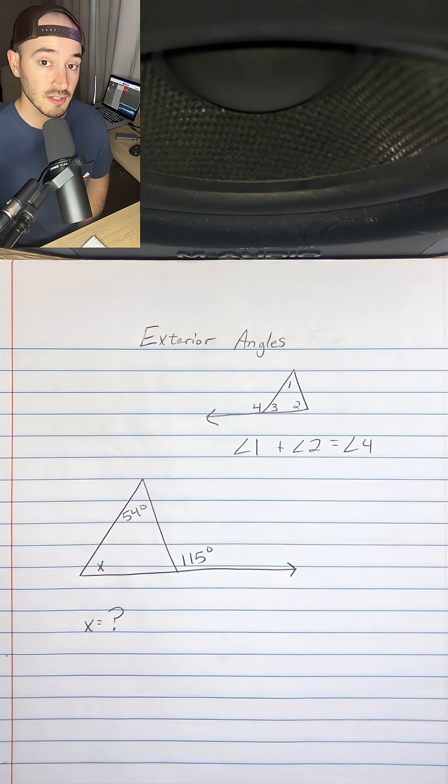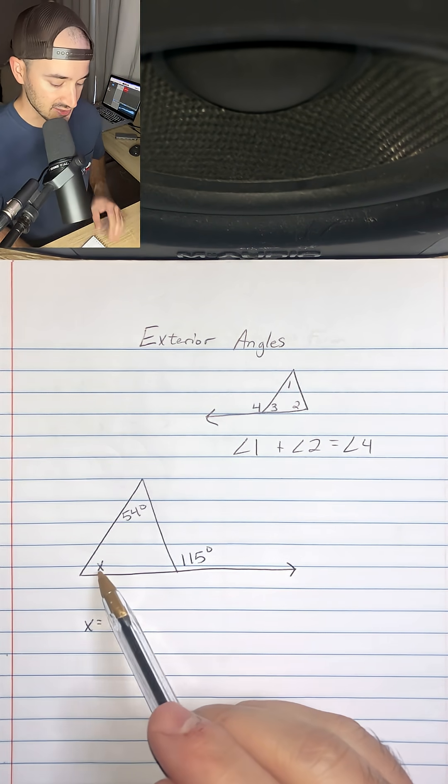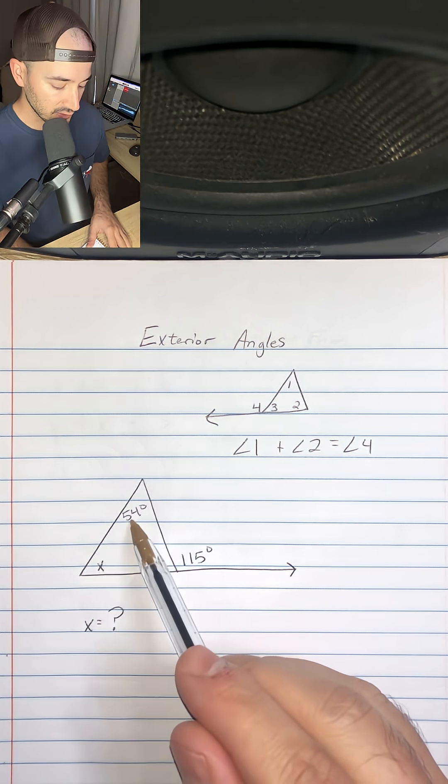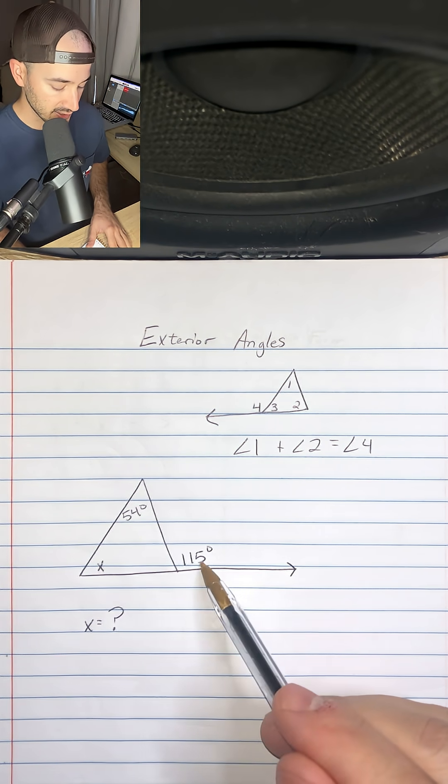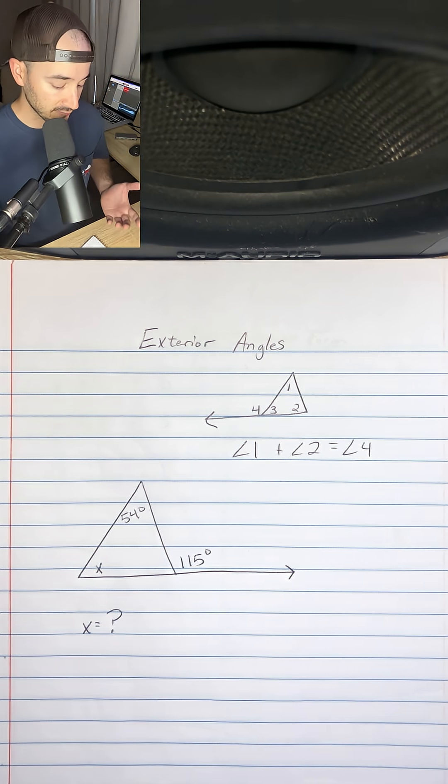So we can use that to solve problems where we're missing an angle like in this one. We have x and 54 degrees and 115 degrees here. So we want to solve for x and we can use that same line of thinking.